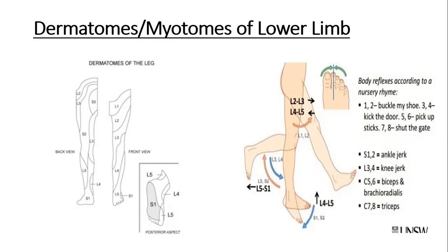Extension of the thigh at the hip joint involves L4 and L5. Extension of the leg at the knee joint is L3 and L4. Flexion of the leg at the knee joint involves L5, S1, and S2. Abduction of the thigh at the hip joint involves L5 and S1.